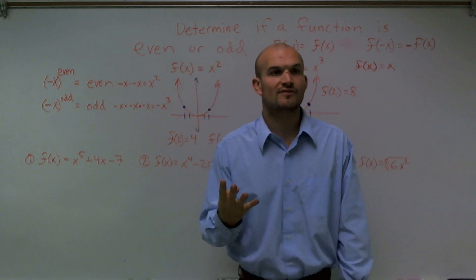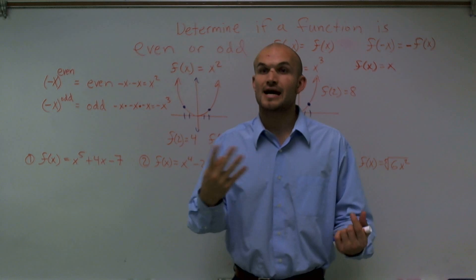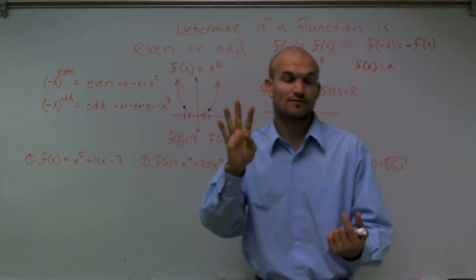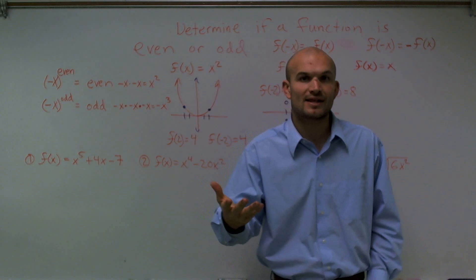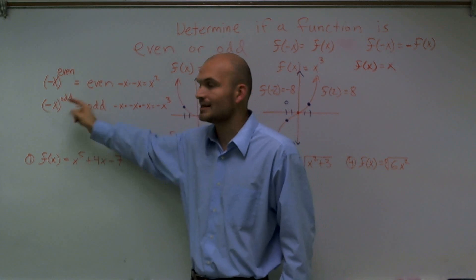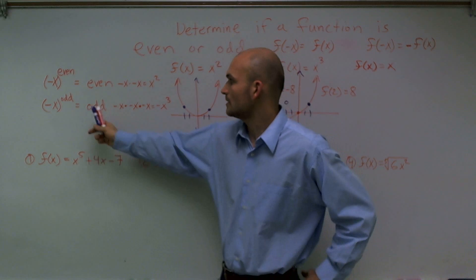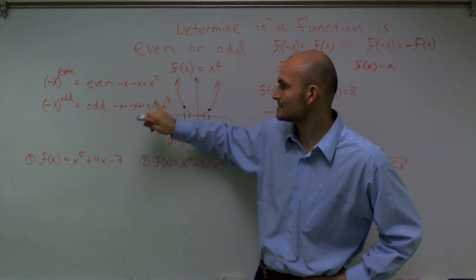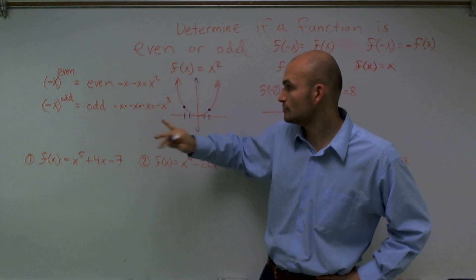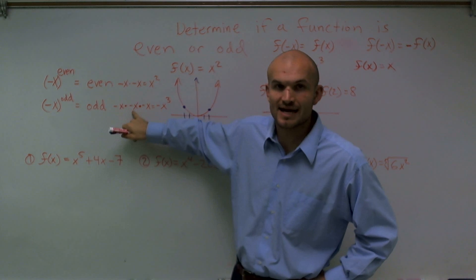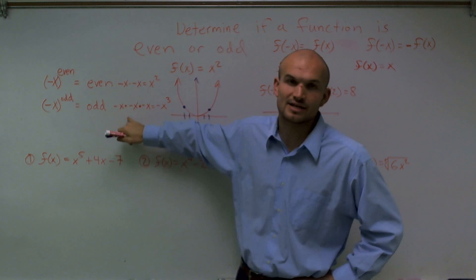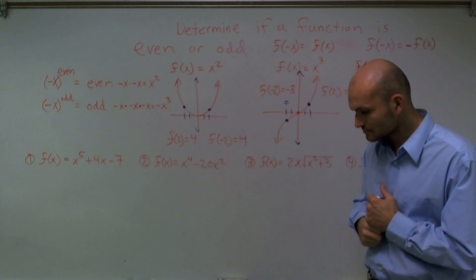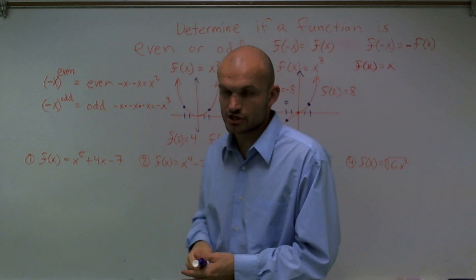A couple things to remember. When you have a negative number raised to an even power, that is going to produce an even number. Negative x times negative x always gives an even number — whether it's x squared or x to the tenth, it always produces an even result. For example, negative 4 to the fourth power gives an even result. However, whenever you take a negative number and raise it to an odd power, you always get an odd number. Negative x times negative x times negative x gives negative x cubed, because negative times negative is positive, but then multiplying by another negative always produces a negative result.